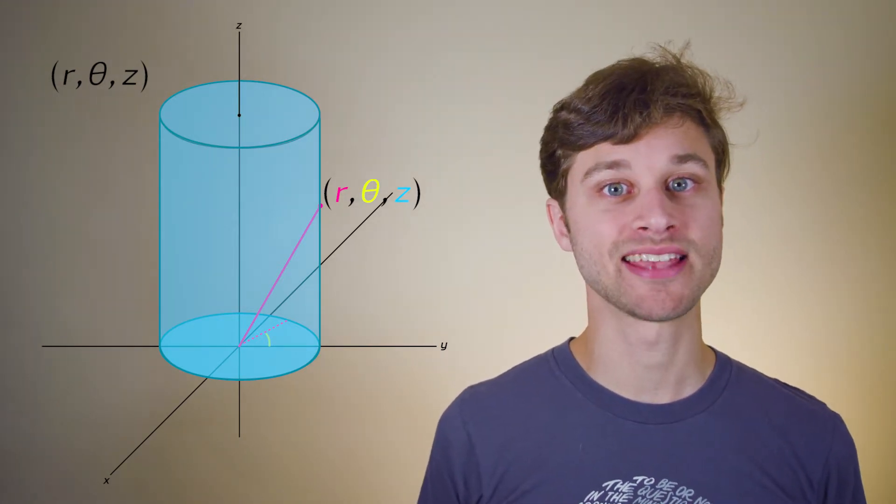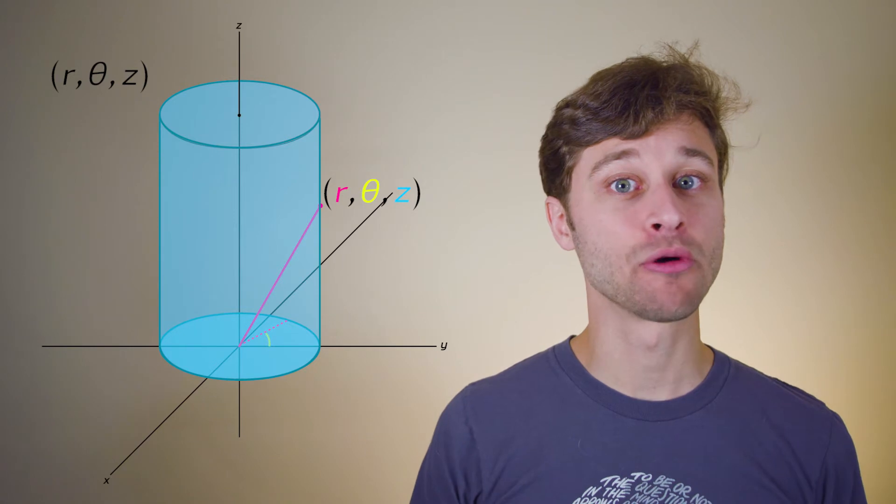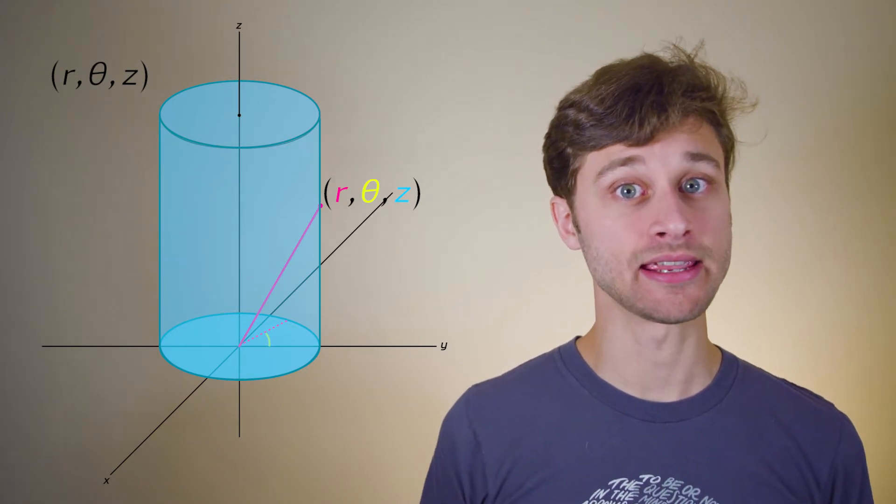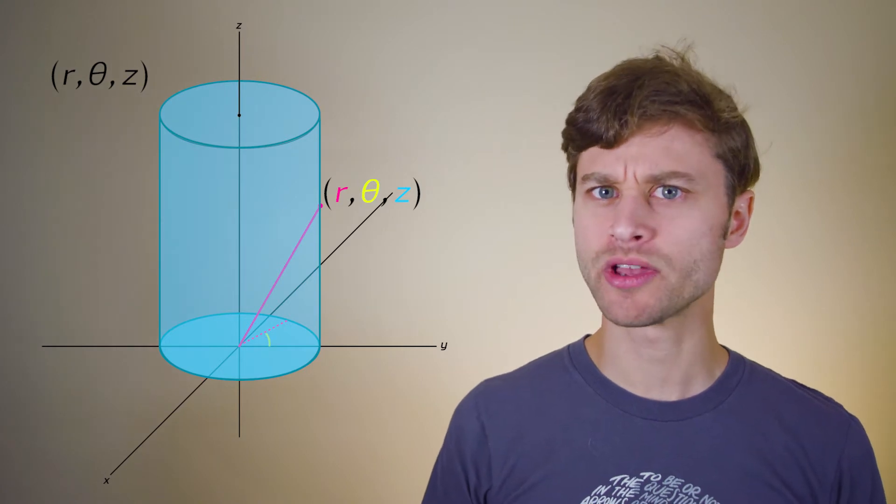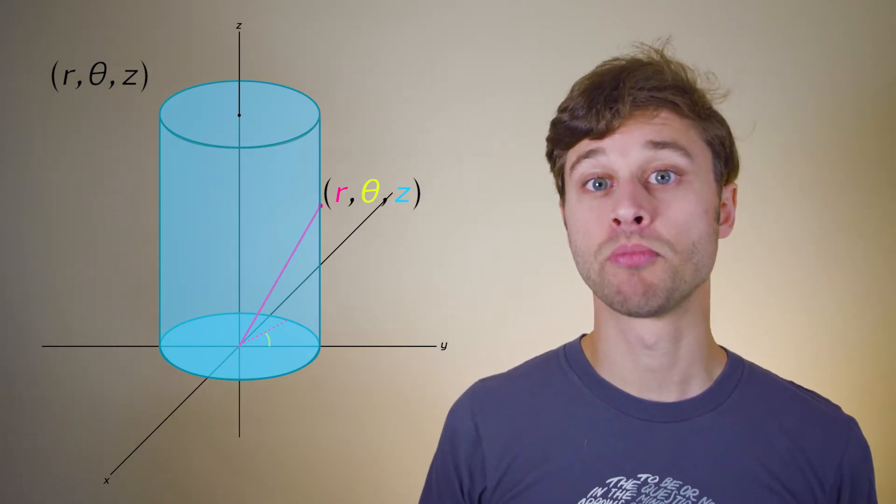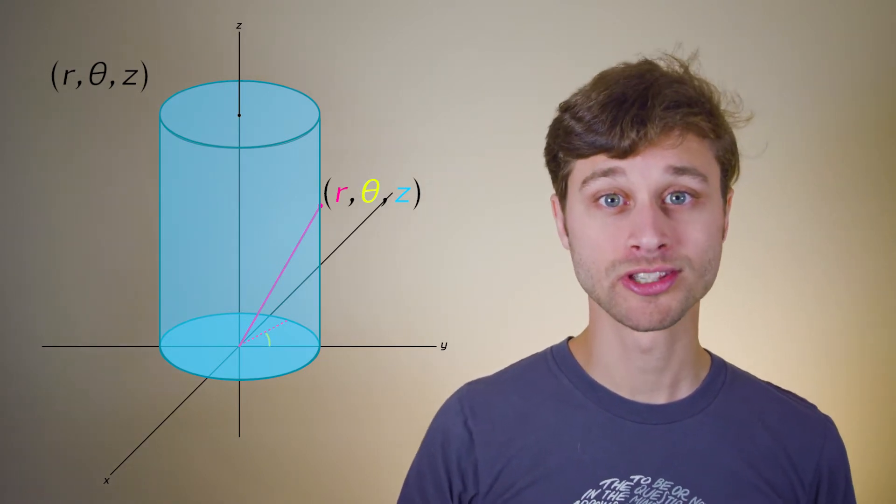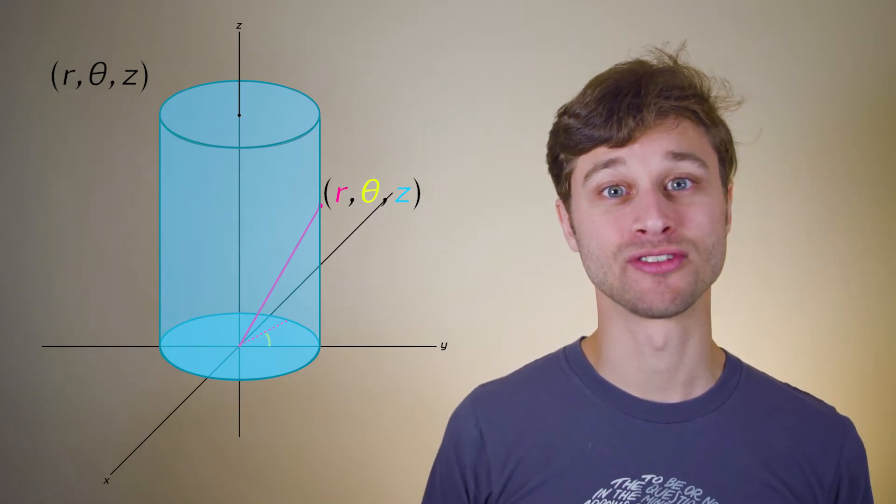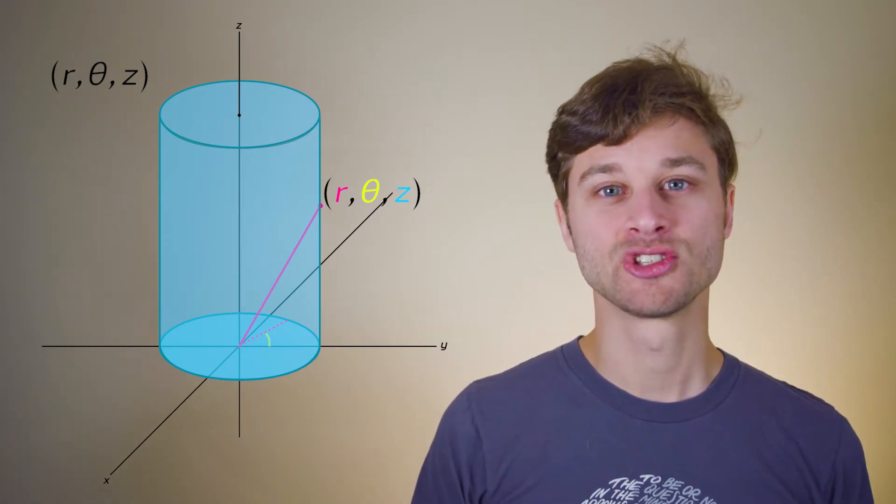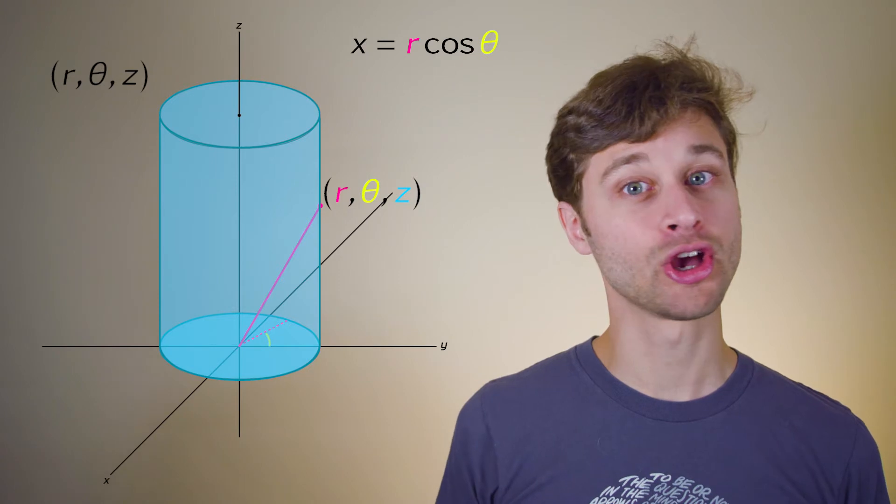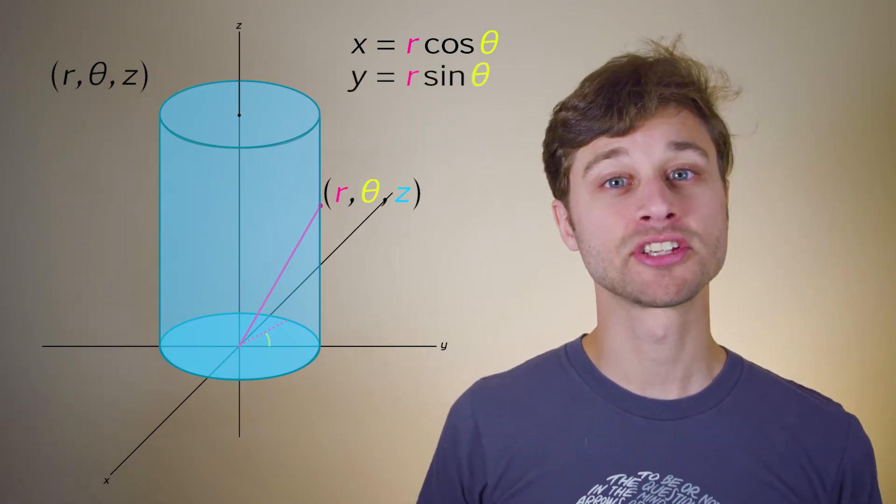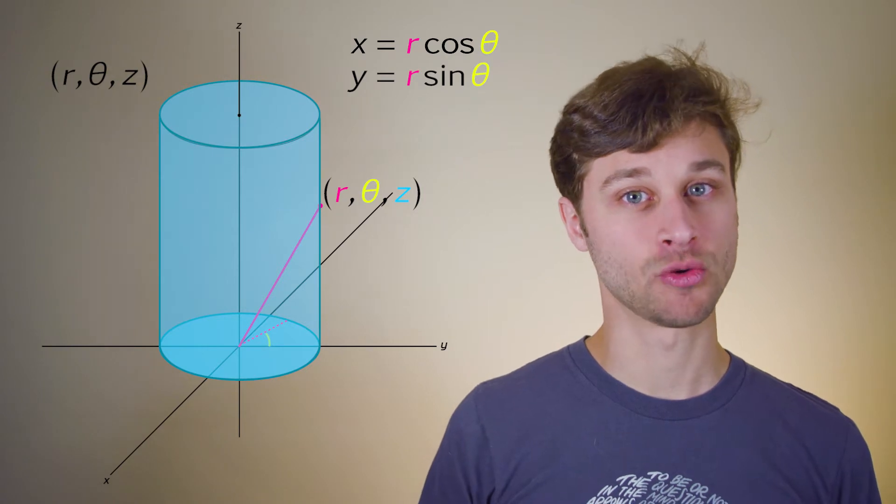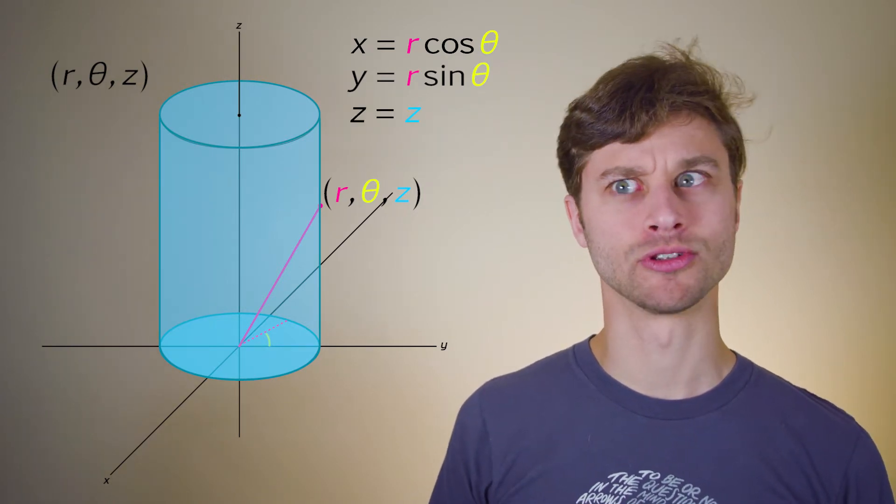Notice that in both Cartesian coordinates and cylindrical coordinates, that our third coordinate is z. That means that the transformations between these two coordinate systems is relatively straightforward. Just as with polar coordinates versus Cartesian coordinates, we can define x in terms of r and theta as well as y, so that x is equal to r cosine theta, and y is equal to r sine theta. Fortunately, those z's are both equivalent in each coordinate system, and so z is just equal to z.